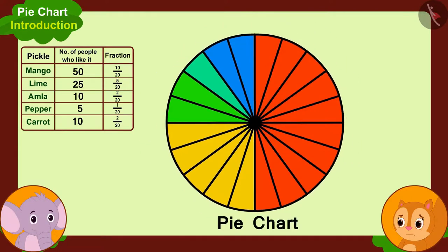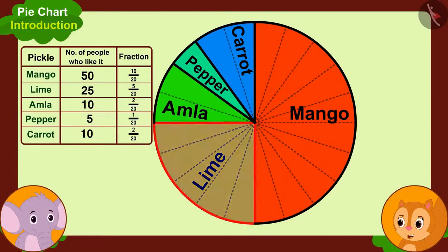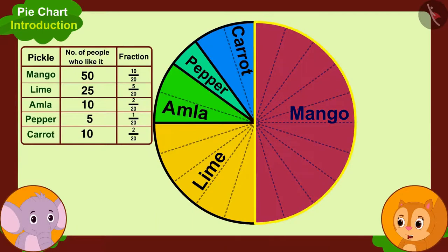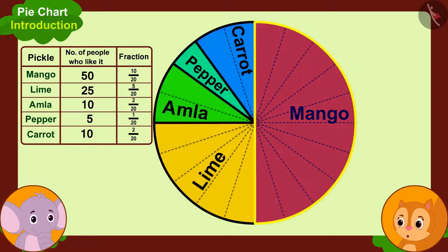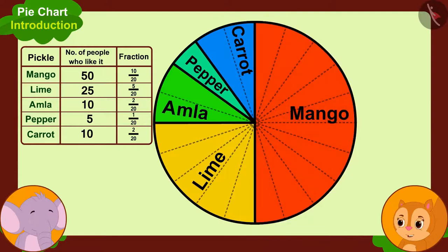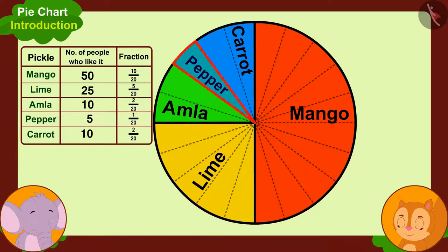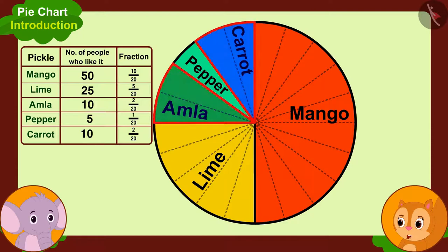Our pie chart is ready. Wow, Appu! Now we can easily find out by looking at these parts that people like mango pickle the most, because the largest part of the pie chart shows the number of people who like mango. And this smallest part shows the people who like pepper pickle, so people who like pepper pickle are the least in number. Look, Appu — a similar number of people like amla and carrot pickle, meaning those who like these pickles are the same in number.